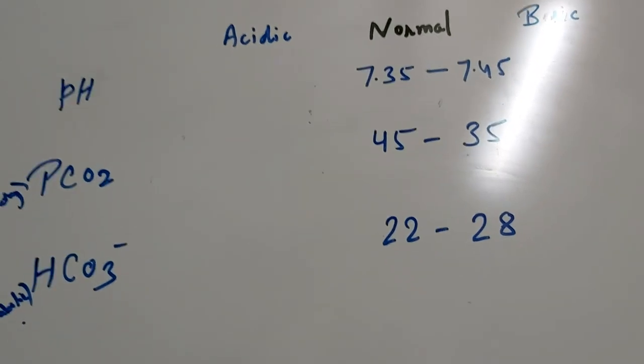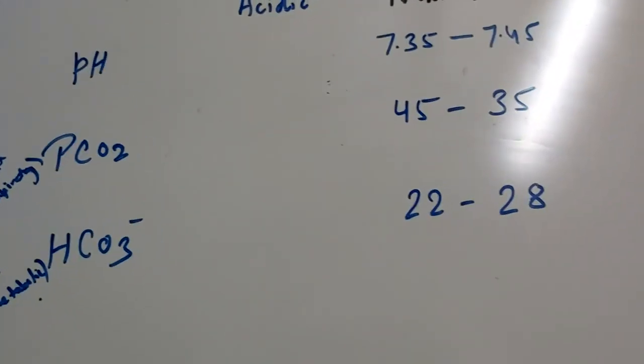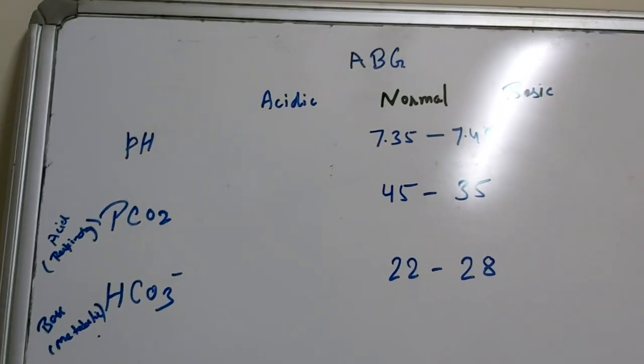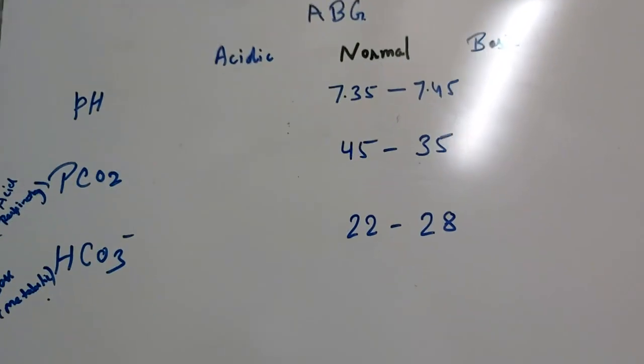And when their values are deranged so as to bring the pH in the normal range, then it will be known as the fully compensated condition.